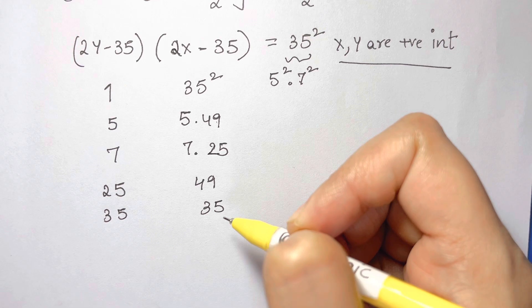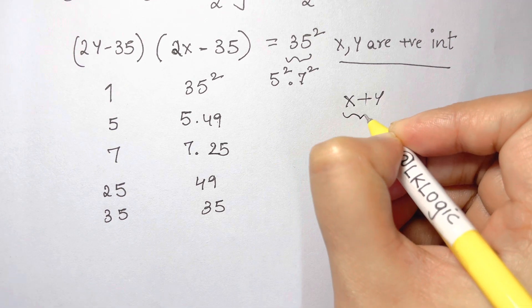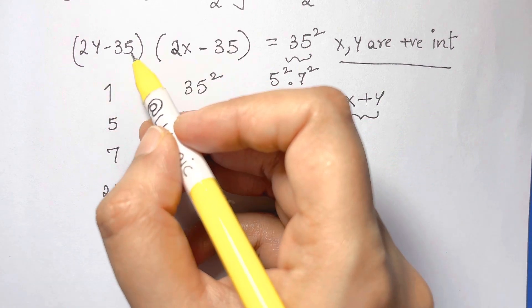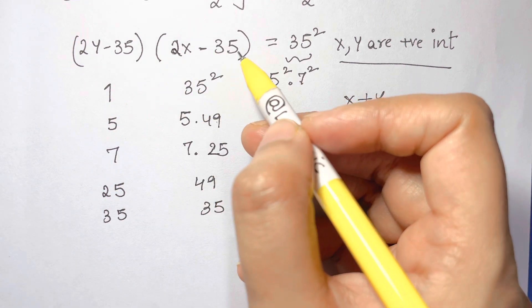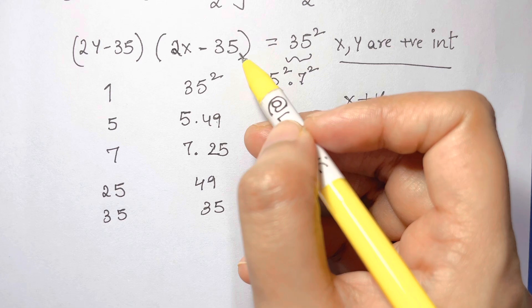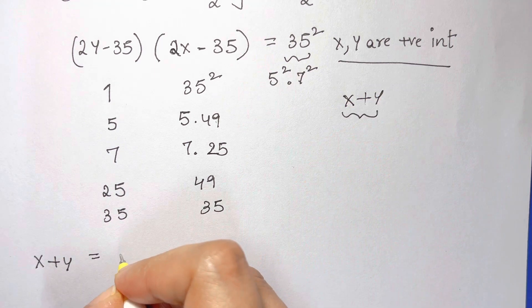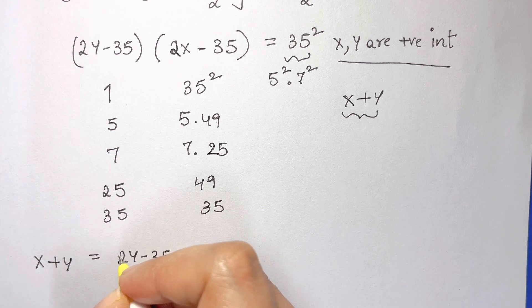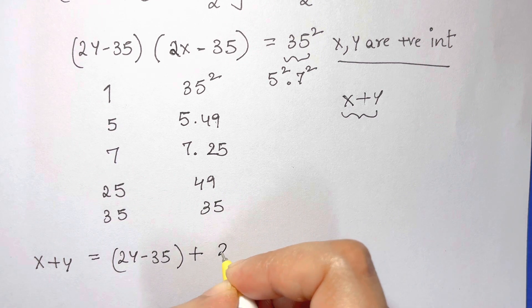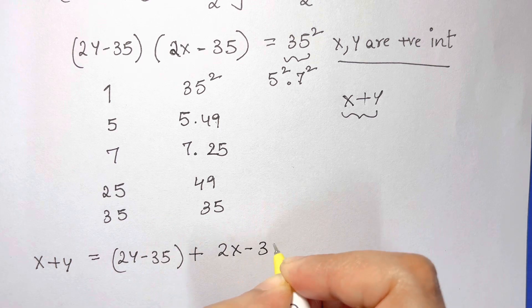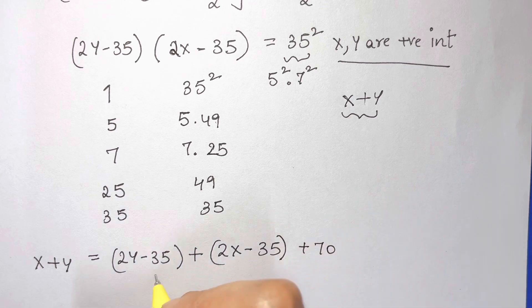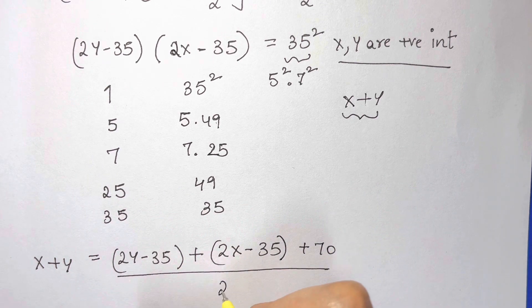But we have to find the minimum value of x plus y in terms of 2y minus 35 and 2x minus 35. It can be written as 2y minus 35 plus 2x minus 35 plus 70 divided by 2.